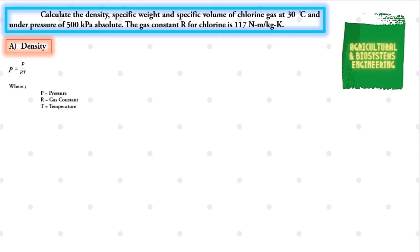Substituting the values, we have: density equals our pressure value of 500,000 pascals over the product of the gas constant value of 117 newton·meter per kilogram·kelvin and the temperature value of 30 degrees Celsius.